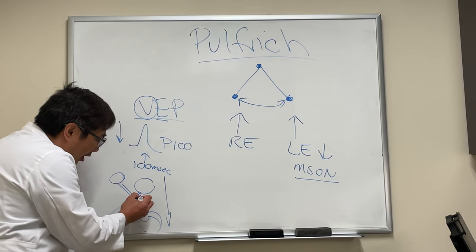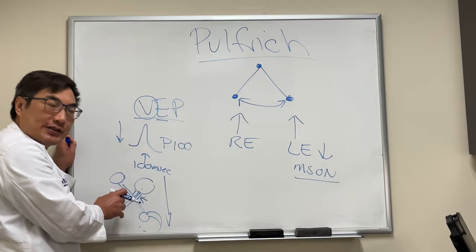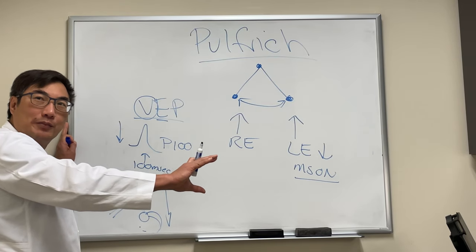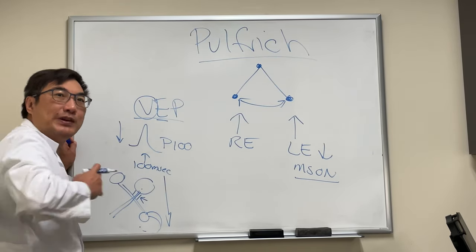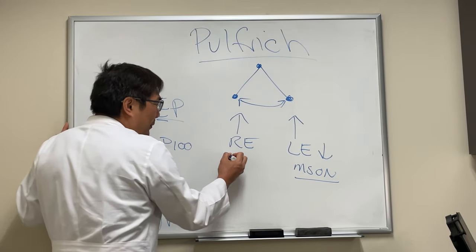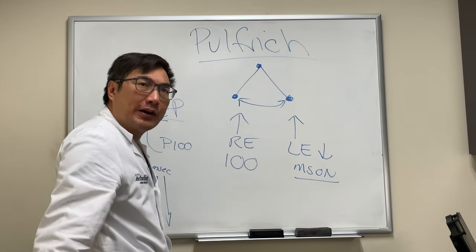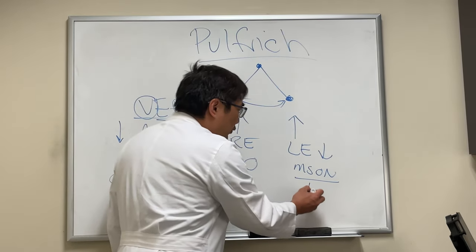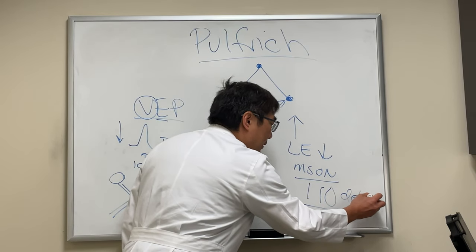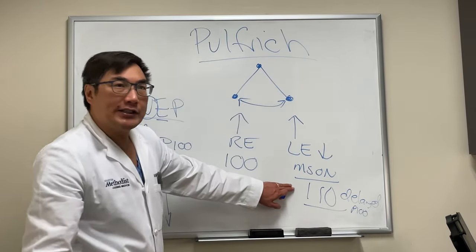If you have lost the myelin sheath from demyelination, the conduction time of that axon will be reduced. That's what myelin does — it speeds the rate of conduction. So you might have a right eye with a normal 100 millisecond P100, while the other eye has a delayed P100.